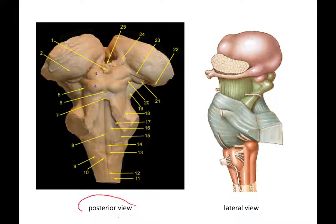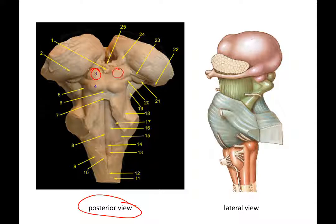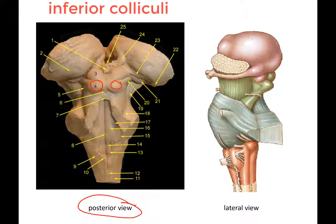From this posterior view, with the cerebellum removed, the corpora quadrigemina are these four bumps. The two superior bumps are known as the superior colliculi and the two inferior bumps are known as the inferior colliculi.